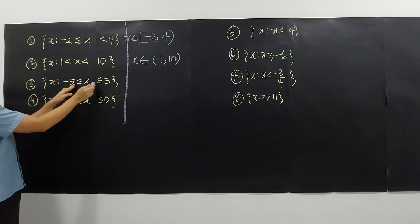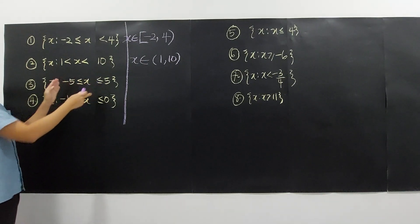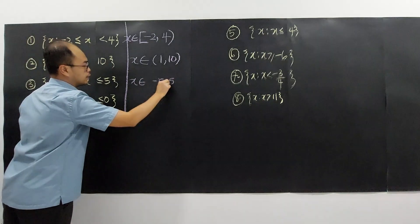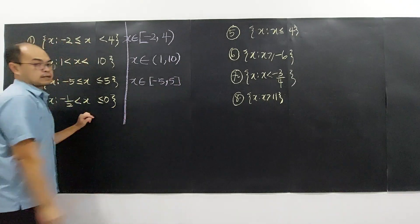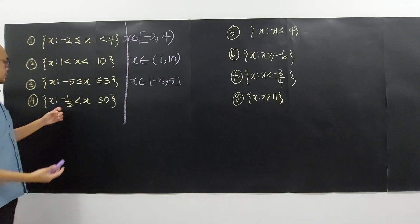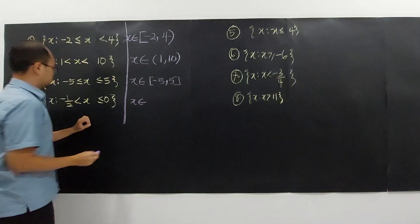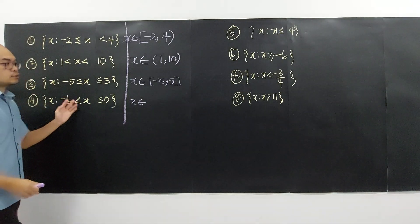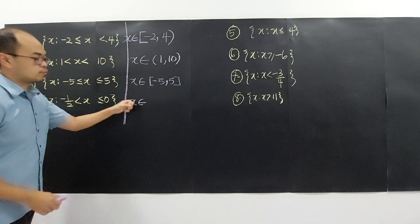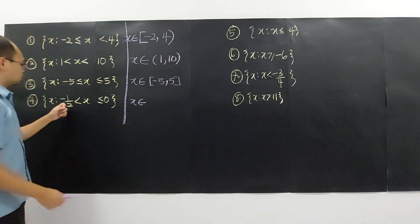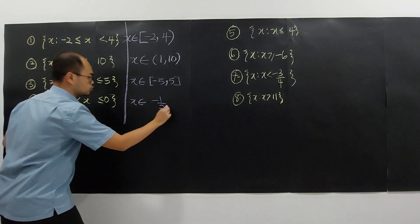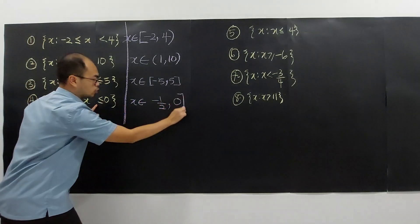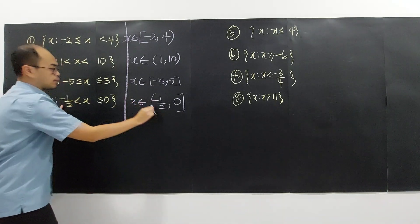For this one, we have two equal signs — from negative 5 up to 5 — so we write X as an element of negative 5 to 5 with closed brackets. And for the last one, X is an element of the interval from negative 1/2 to 0: include 0 with a closed bracket, and negative 1/2 is not included, so open bracket.